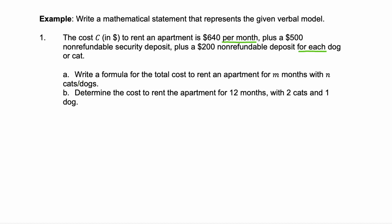So, in part A, it says write a formula for the total cost to rent an apartment for M months with N cats and dogs. So, we go back to our equation and our statement says $640 per month. Well, that's $640 times M. And we know we have N cats and dogs. So, we have $200 for each times N dog or cat.